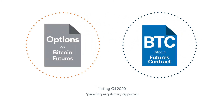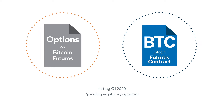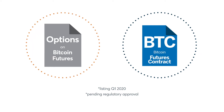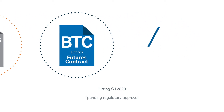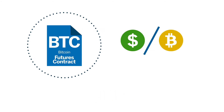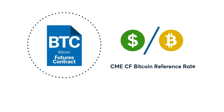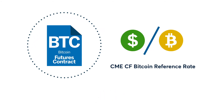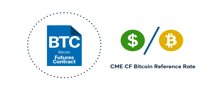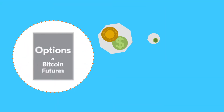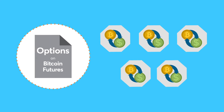The underlying for CME Bitcoin options is one CME Bitcoin futures contract. The CME Bitcoin futures contract represents 5 Bitcoin and cash settles to the CME CF Bitcoin Reference Rate, or BRR. Therefore, an option on Bitcoin futures provides that same 5 Bitcoin exposure.